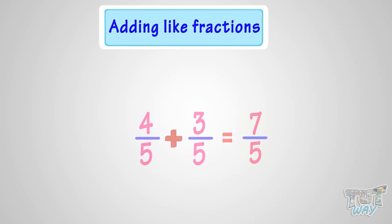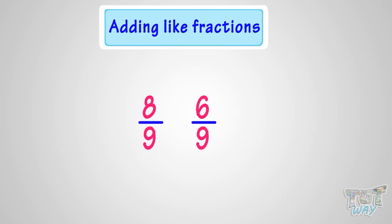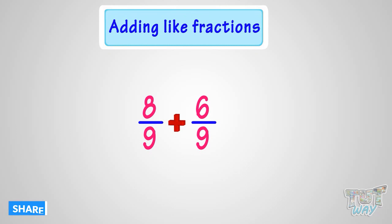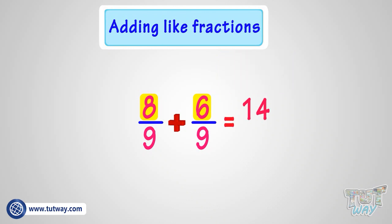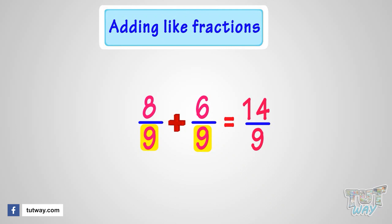Let's have a look at more examples. Here we have another example. We have to add 8 by 9 and 6 by 9. These are like fractions as the denominators are same. So we just have to add the numerators. Adding numerators, that is adding 8 and 6, we get 14. Denominator will remain the same. So the sum of fractions 8 by 9 and 6 by 9 is 14 by 9.